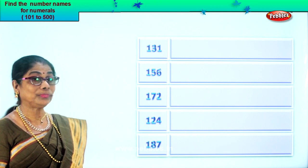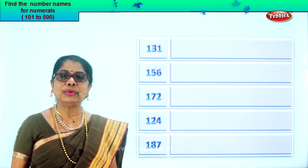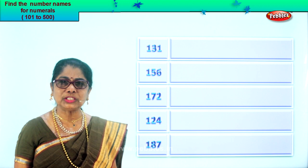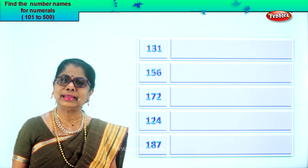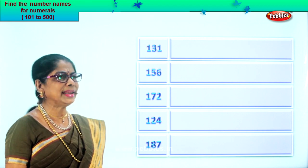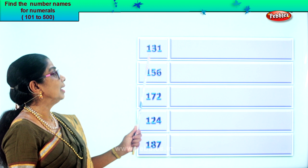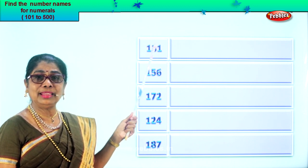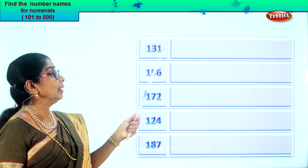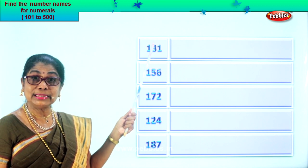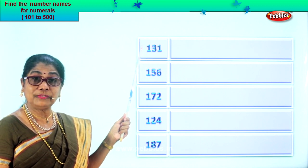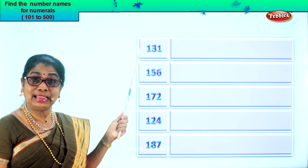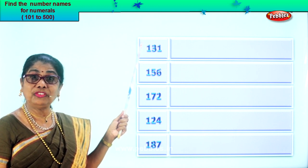Look at this. When you read aloud, look at the ones place, tens and hundreds. Easily you can write its name. Look at the numeral here: one, three, one. This is the ones place, tens and hundreds. The first number is one, so we read it as one hundred.